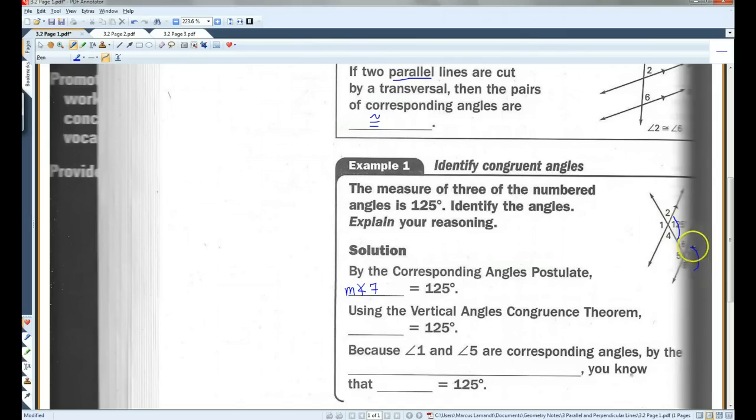Now, if this is 125 degrees, then angle 5, which is a vertical angle with angle 7, also has to be 125 degrees.